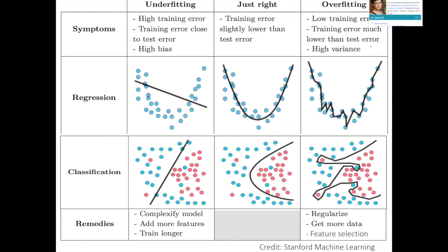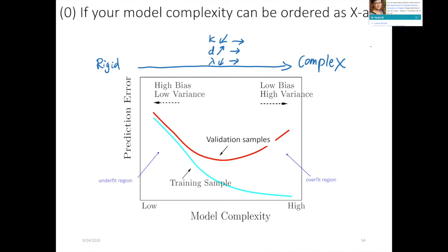Once you figure out whether you're overfitting or underfitting, you can react accordingly. You need to be quite sure: is my model overfitting or underfitting? That's the first step — then react accordingly. After you can order complexity, you can always control the full range from underfitting to overfitting using the validation curve, because you have a hyperparameter that controls the movement.